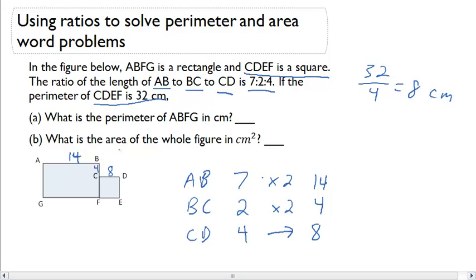So we've got some dimensions, but we still haven't answered any questions yet. Let's do that. What is the perimeter of ABFG in centimeters? So ABFG is this rectangle. I know that this side is 14.